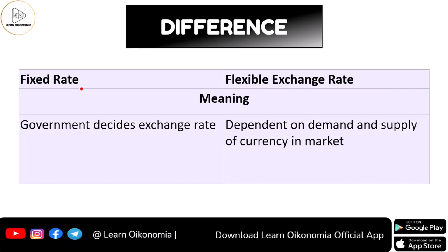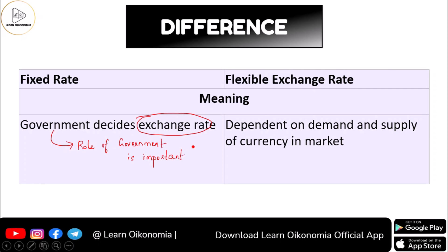You could see that the fixed exchange rate system is where the government of a nation decides the exchange rate — so here the role of government is important. In the case of the flexible exchange rate system, this is dependent on the market forces of demand and supply when it comes to the currency market.